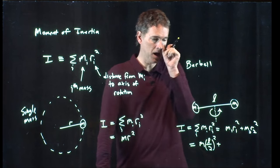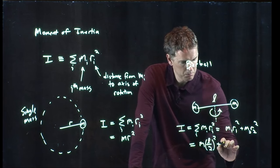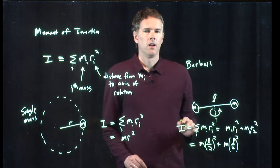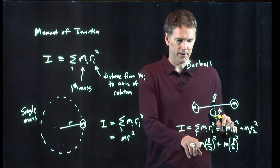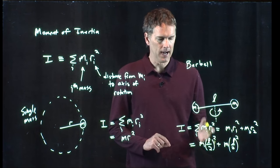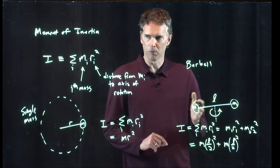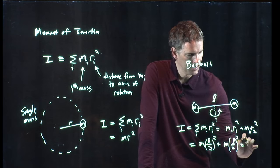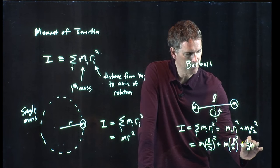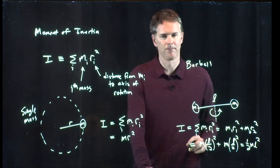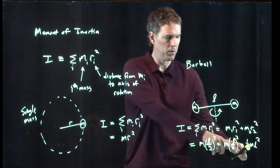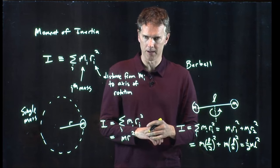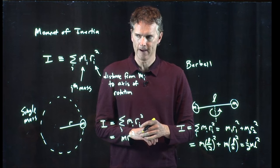So we get m l over 2 squared plus m l over 2 squared. I put them together. What do I have? I have an m. I have an l squared. I have 1 over 4 plus 1 over 4, which is 2 over 4, which is 1 half. And so I get 1 half m l squared. Here we go. This is the moment of inertia of a two-particle barbell spinning about its center.